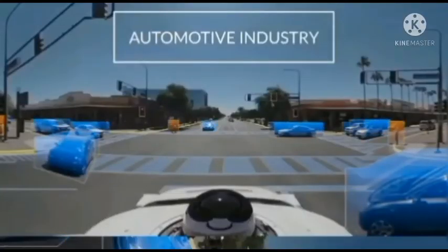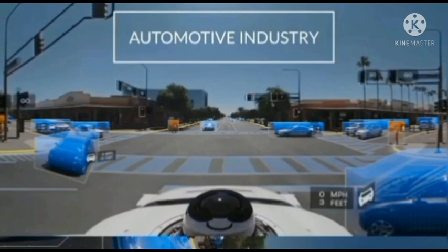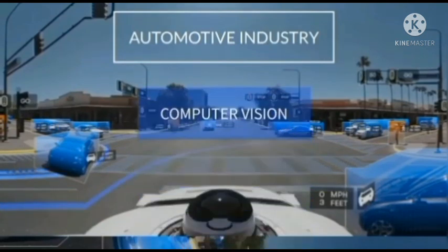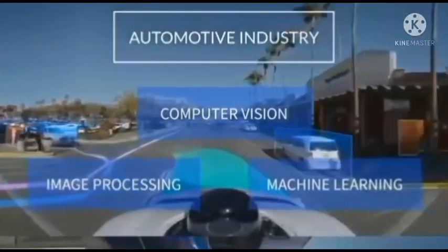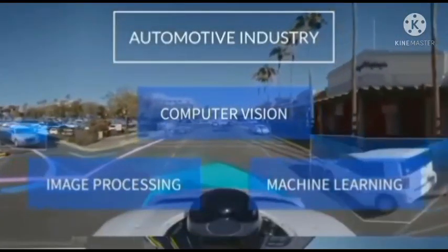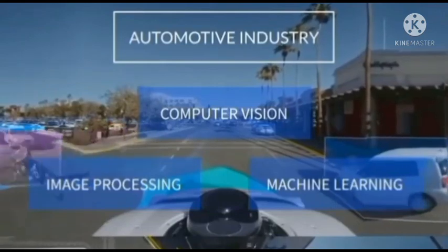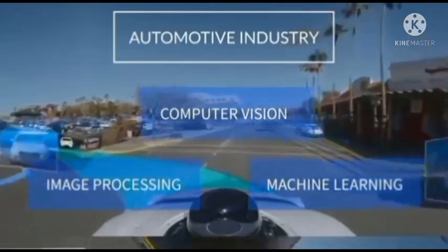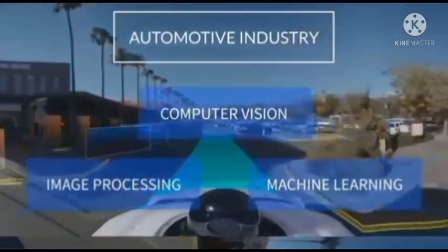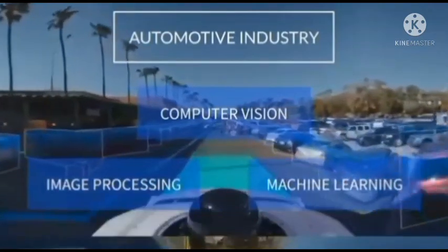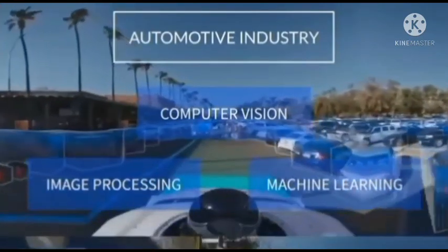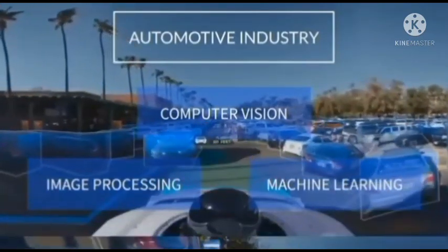The technique which helps cars see and comprehend the world around them is computer vision, which involves image processing and machine learning. Many big players in the auto industry are developing technologies for safer, smarter self-driving cars, which requires people with image processing skills.